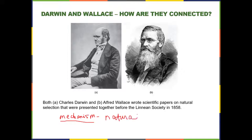Darwin did not propose evolution — he proposed a mechanism to explain evolution, which became known as natural selection. Wallace came up with the same idea. In fact, Wallace wrote a letter to Darwin and sent him a draft of his paper. Darwin had not published anything significant in the 20 years since he came back from the Beagle. Wallace, the younger naturalist, sent him this draft and asked for his opinion. Darwin realized that if Wallace published, Wallace would get the credit for natural selection.